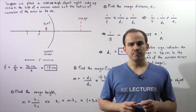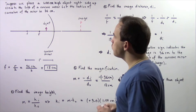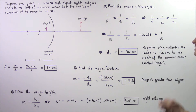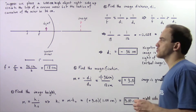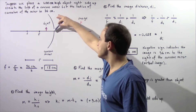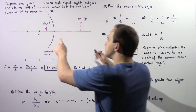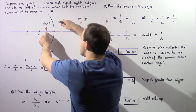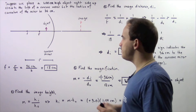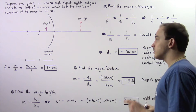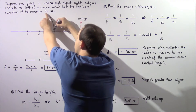Let's continue solving examples using the mirror equation and concave mirrors. Suppose we place a 1.00 centimeter high object, right side up, to the left of our concave mirror at a distance of 12 centimeters. This is our concave mirror, this is the center, and we place our object right side up 12 centimeters to the left. Let the radius of curvature of our concave mirror be 36 centimeters, so the perpendicular distance from the center to point R is 36 centimeters.